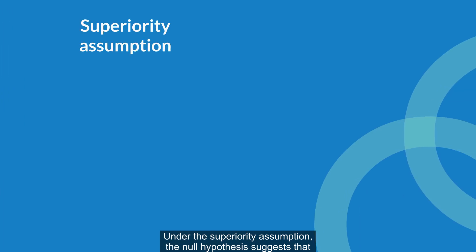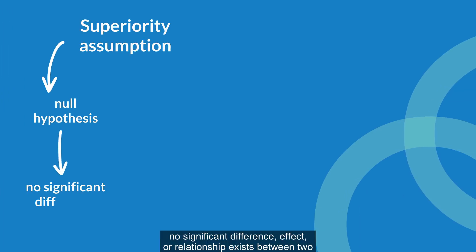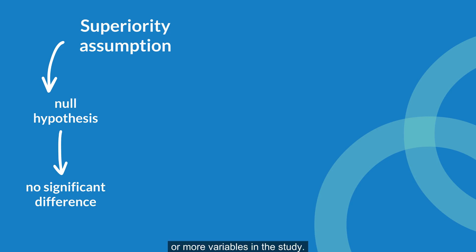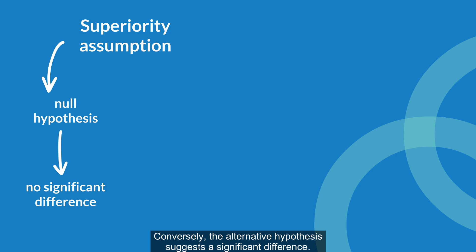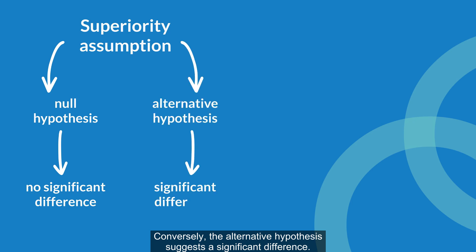Under the superiority assumption, the null hypothesis suggests that no significant difference, effect, or relationship exists between two or more variables in the study. Conversely, the alternative hypothesis suggests a significant difference.